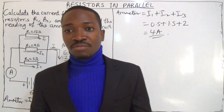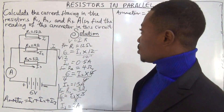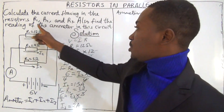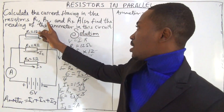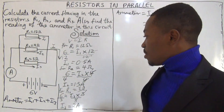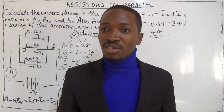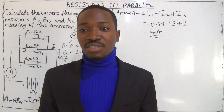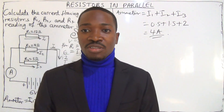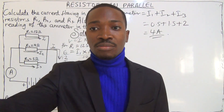As easy as that. We've answered the question — we found the current flowing through R1, R2, and R3, and we found the reading of the ammeter. Questions on electricity are as easy as this. Thank you for listening, and have a nice day.